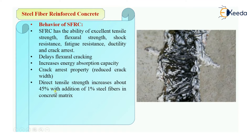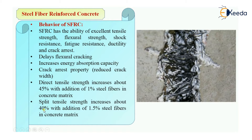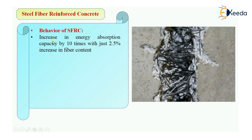Direct tensile strength increases about 45 percent with just the addition of 1 percent of steel fibers in the concrete matrix. Split tensile strength also increases by 40 percent with addition of 1.5 percent steel fibers in concrete. Increase in energy absorption capacity will be 10 times with the addition of 2.5 percent fiber content.